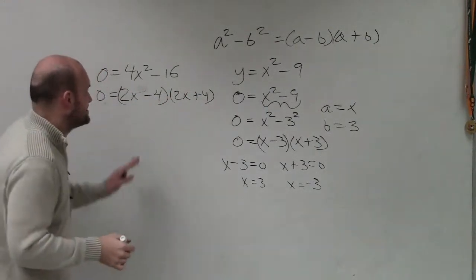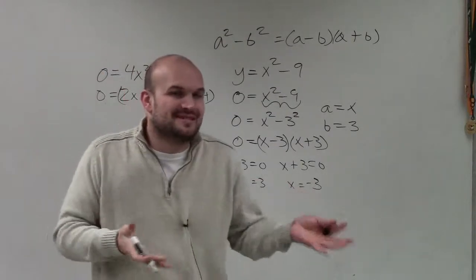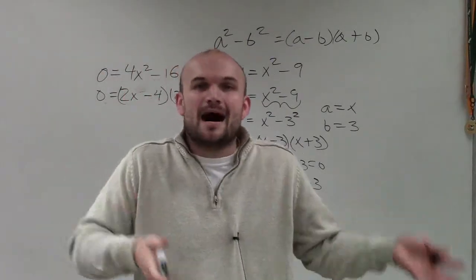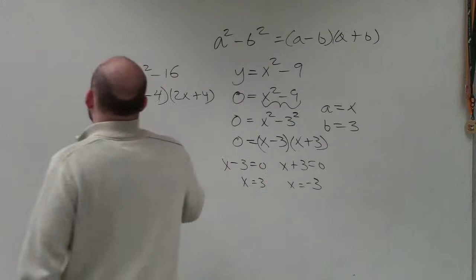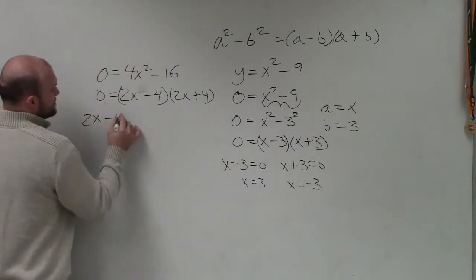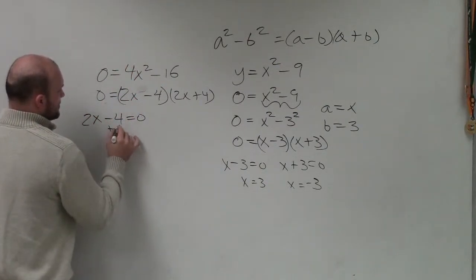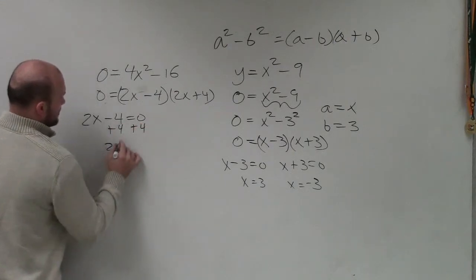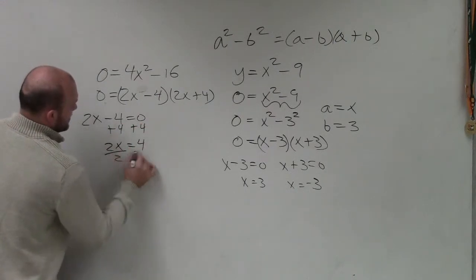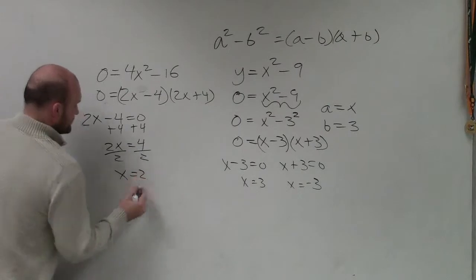Well, what's nice about this is once I solve one, I know the other one's going to be the exact same answer, but just the opposite value. If one's positive, then the other one has to be negative. So I'll just do one. 2x minus 4 equals 0. So I add 4, add 4. 2x equals 4. Divide by 2, divide by 2. x equals 2.